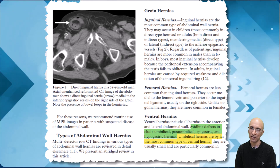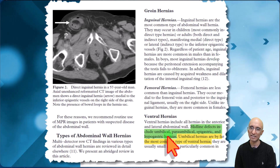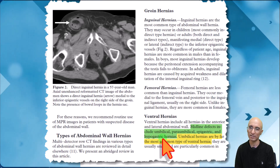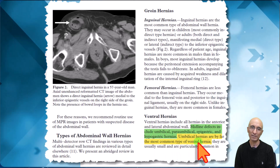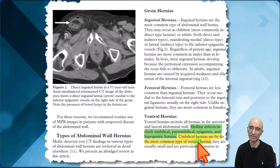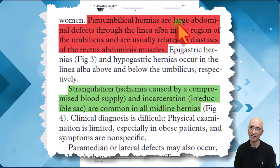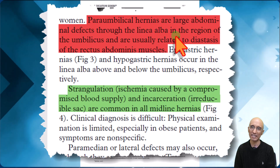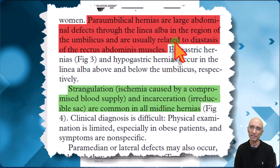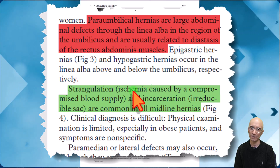Ventral hernias are due to midline defects which can be seen in the umbilical, paraumbilical, epigastric, and hypogastric regions. Umbilical hernias are by far the most common type of ventral hernia. Paraumbilical hernias are due to defects in the linea alba in the region of the umbilical, usually related to diastasis of the rectus abdominis musculature.